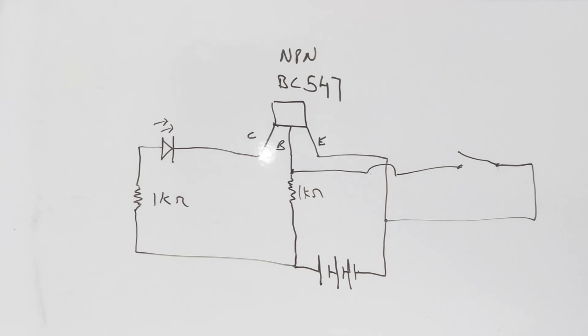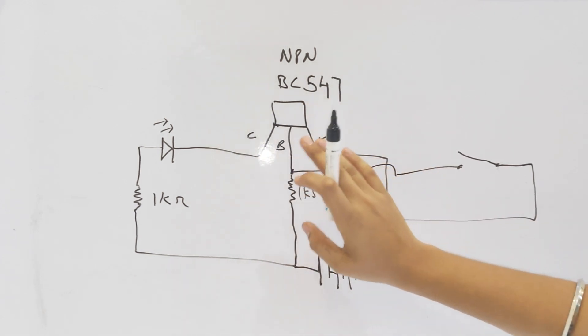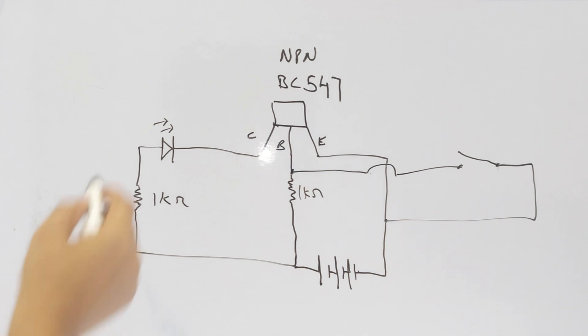Now we see how it works. When the switch is open, current will go through the 1k resistor and go to the base terminal of the transistor, which opens the collector-emitter junction and the LED will glow.